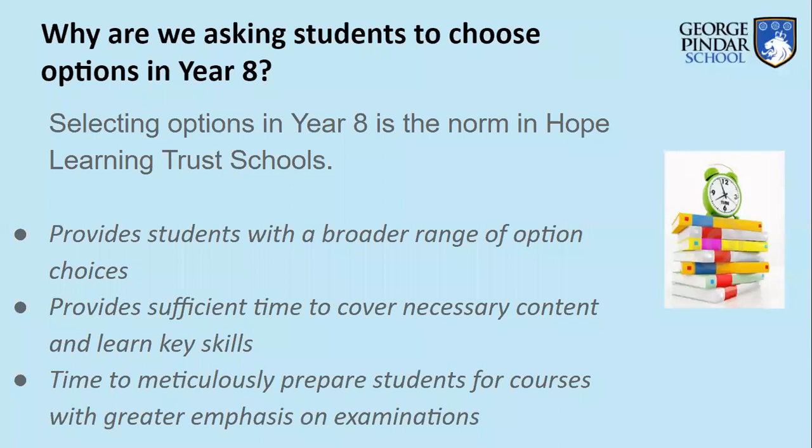So why are we asking you to make these option choices so early, in year eight? Selecting option choices in year eight is the norm in Hope Learning Trust schools. A three-year key stage four means we are able to offer more option subjects. Each GCSE has a minimum number of guided learning hours, and with three years we have more time — meaning we can offer a broader range. If we tried to squash it into two years, you'd be limited to one option in some cases rather than the three or four we're offering.